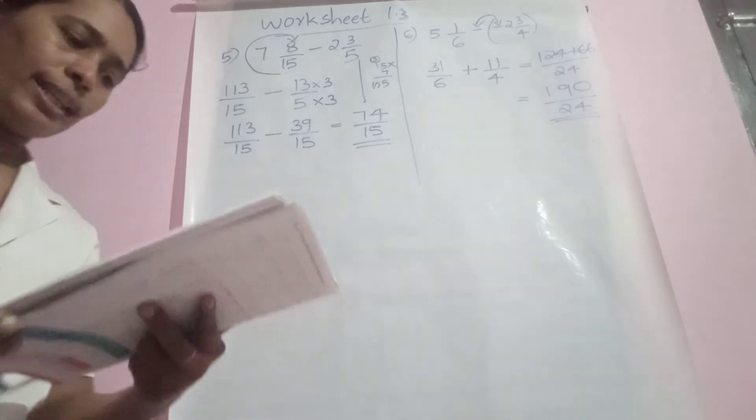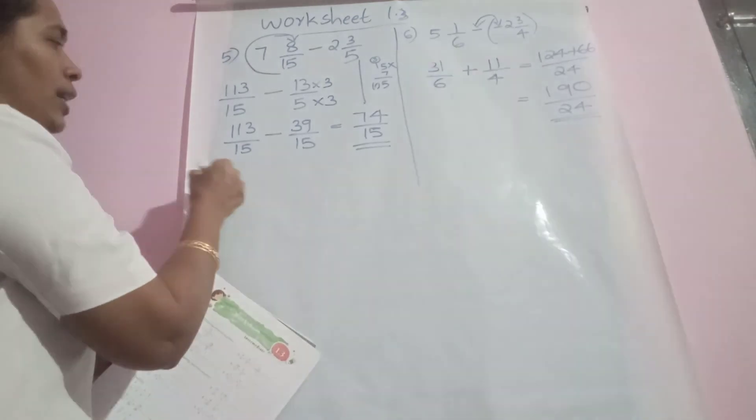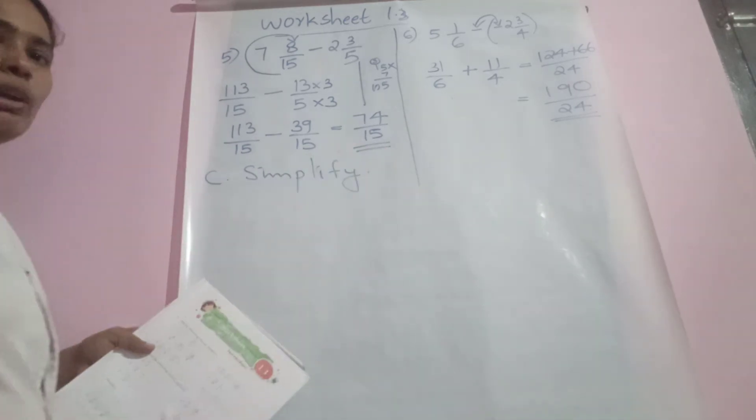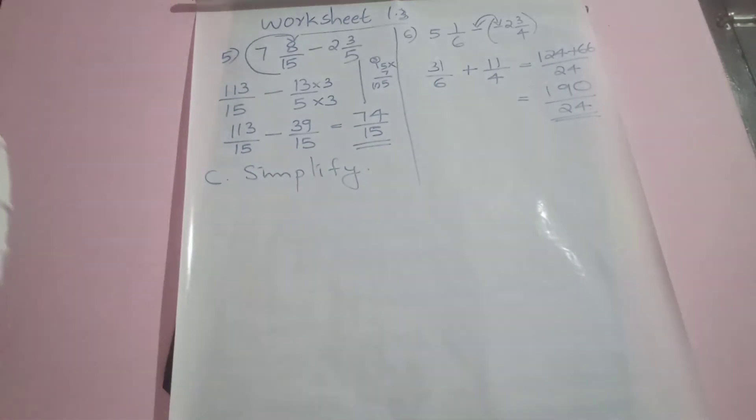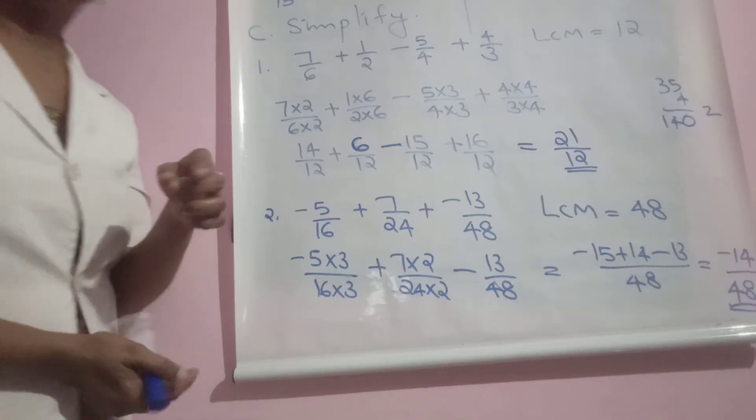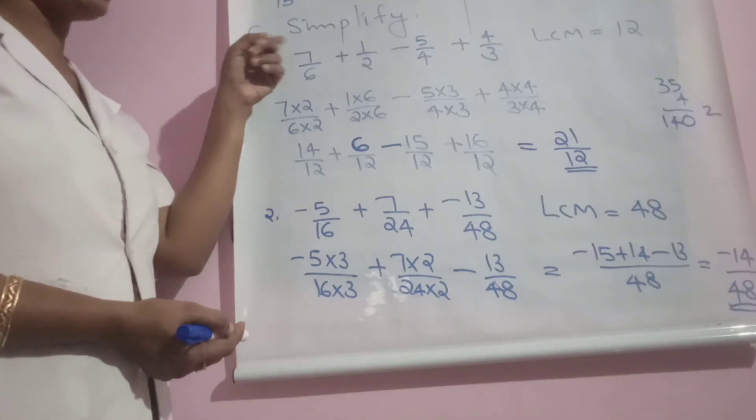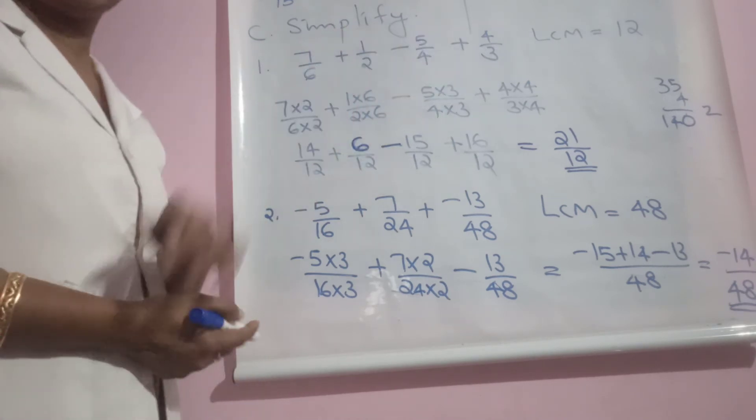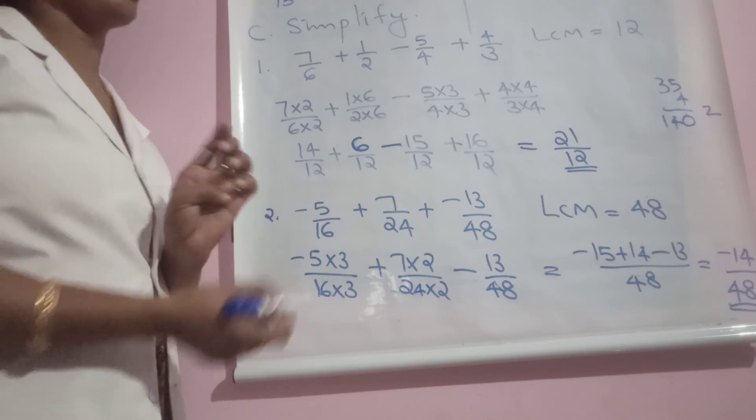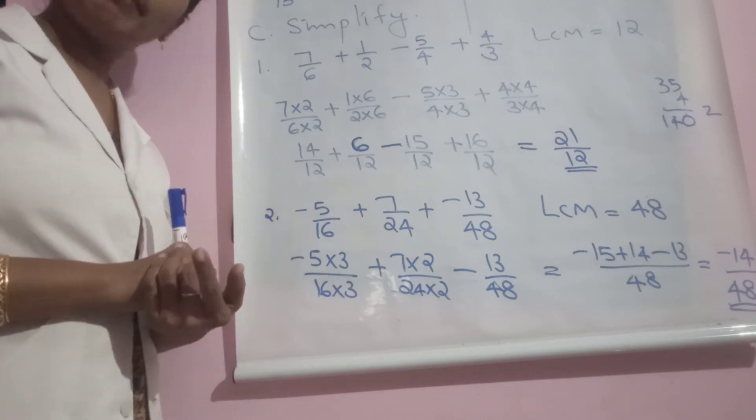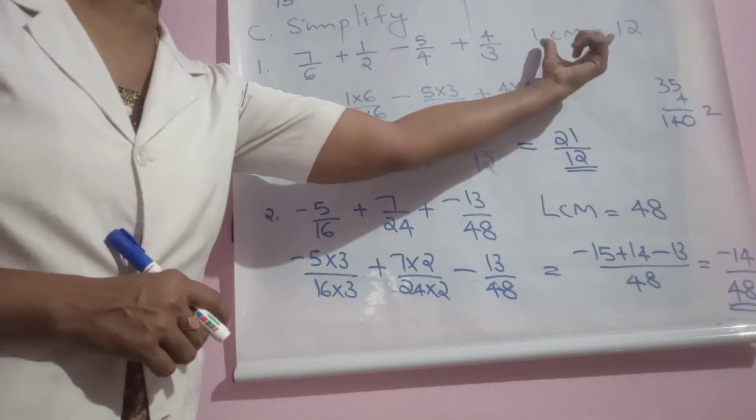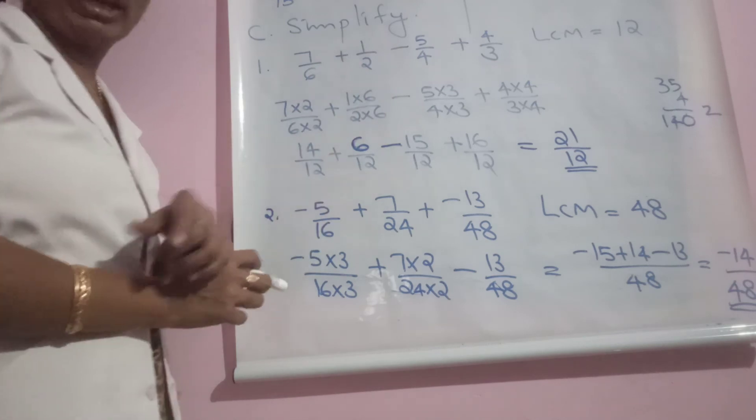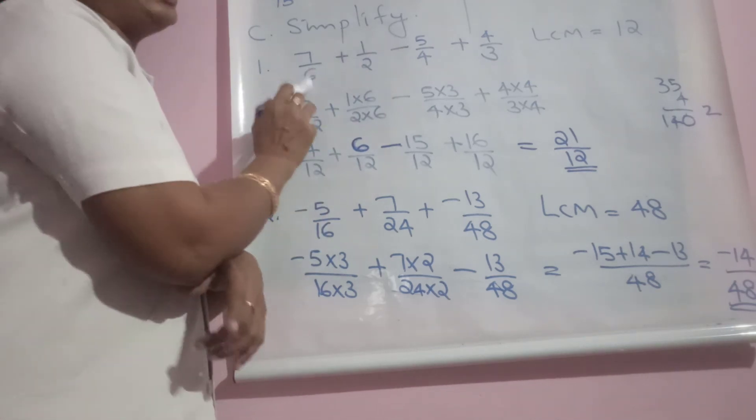Let us move to another section called simplification. Simplify the following. Begin question C: simplify 7/6 plus 1/2 minus 5/4 plus 4/3. Four different denominators, so we can consider LCM itself. LCM equals 12, the least common multiple to all these.